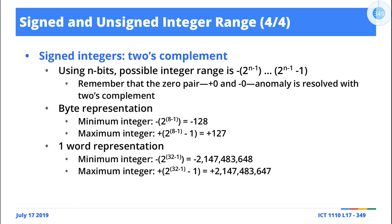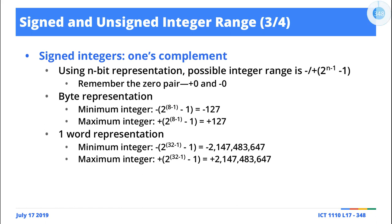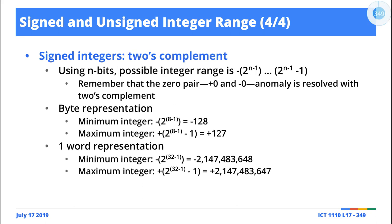Things only change when we are working with two's complement. Because we've solved the problem of having two zeros — we effectively got rid of the negative zero — instead of having a negative zero we now have an additional slot for a negative number. So the range becomes negative two to the power n minus one, all the way up to positive two to the power n minus one, minus one.